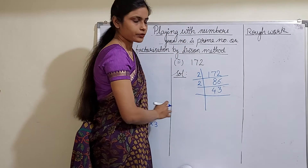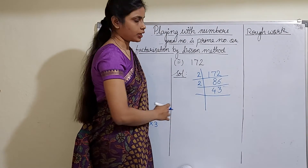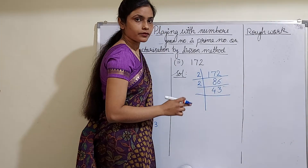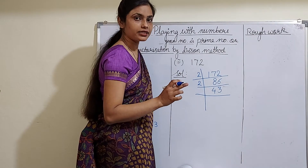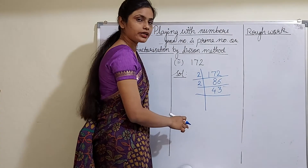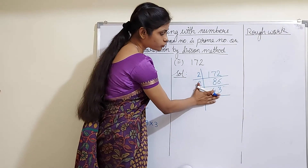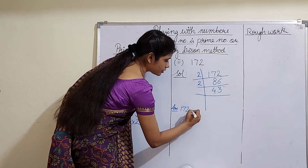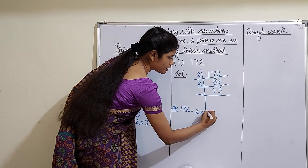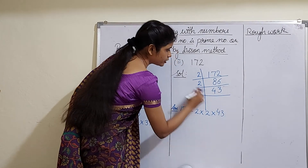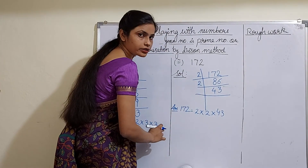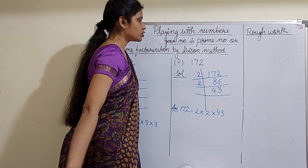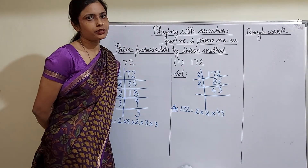Now 43 — you can't divide this by 2. It is also not exactly divisible by 3 because 4 plus 3 is 7, which is not divisible by 3. Like this, you can find out that 43 is a prime number, so we stop here. So 172 can be written as 2 multiplied by 2 multiplied by 43. As you reach a prime number, you stop the division there. This is how you do prime factorization by division method.